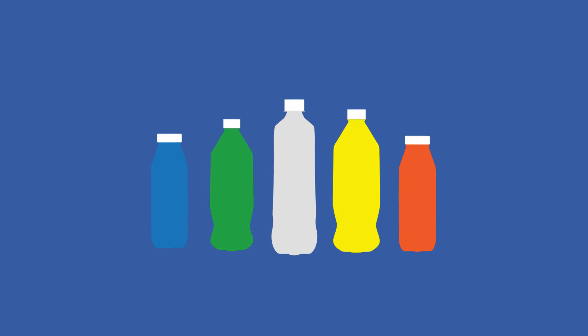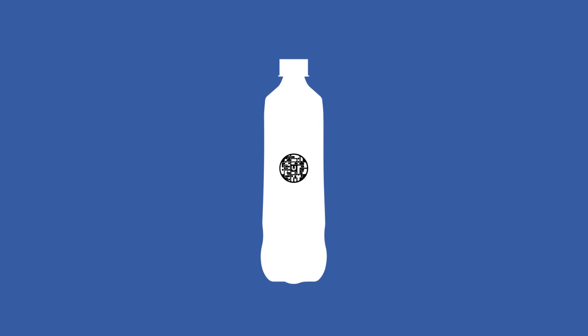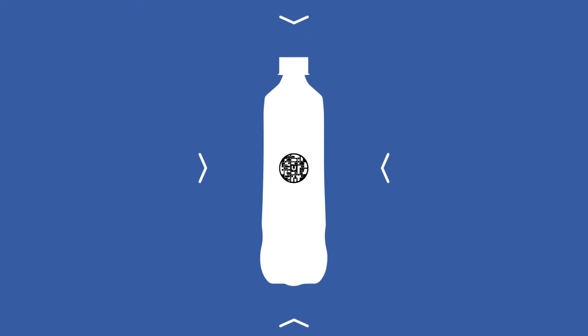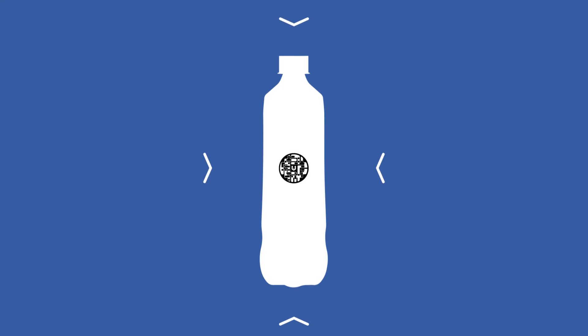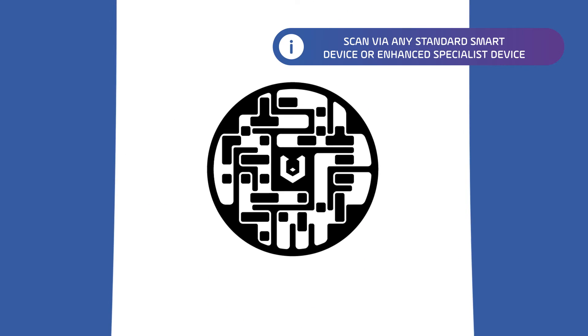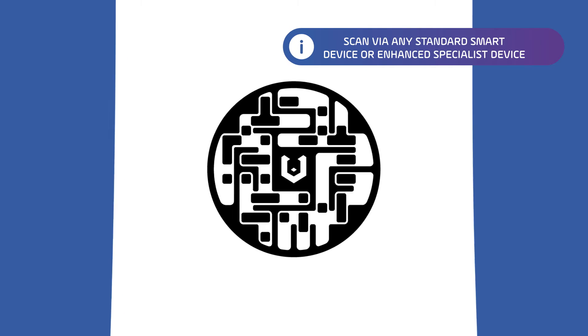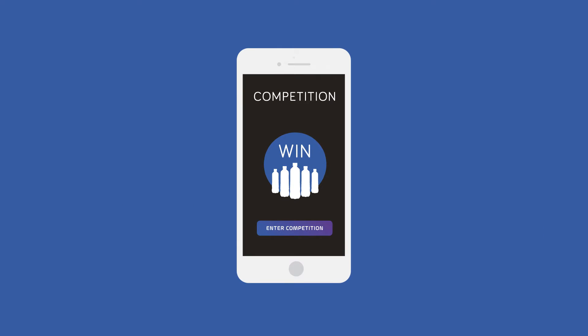What if you could deliver bespoke content tailored to your consumers' preferences? What if that content could be delivered based on the user's location and time of day? Better still, gather real-time data to support your business intelligence. No more what-ifs — V Code does it. Once a V Code is scanned, bespoke content is delivered to your consumer's smart device.